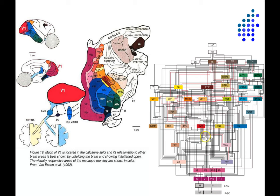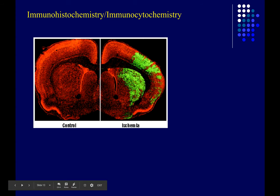Immunohistochemistry or immunocytochemistry is another really important tool for understanding the microscopic structure of the brain. Specifically, it's used for identifying the distribution of proteins in the brain. Certain proteins are only expressed in certain types of cells or under certain conditions, and we can use these tools to figure out where those proteins are being expressed and as a result identify only certain types of cells and where they are in the brain.